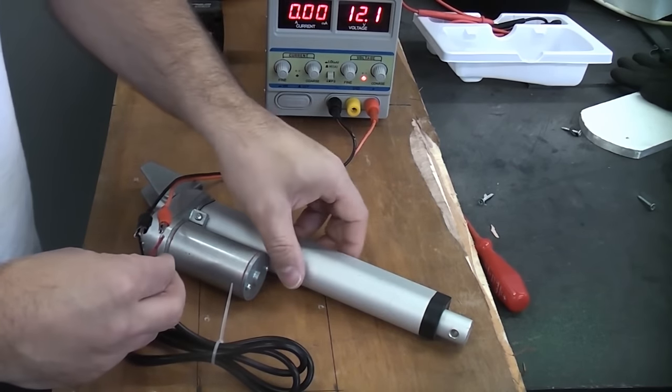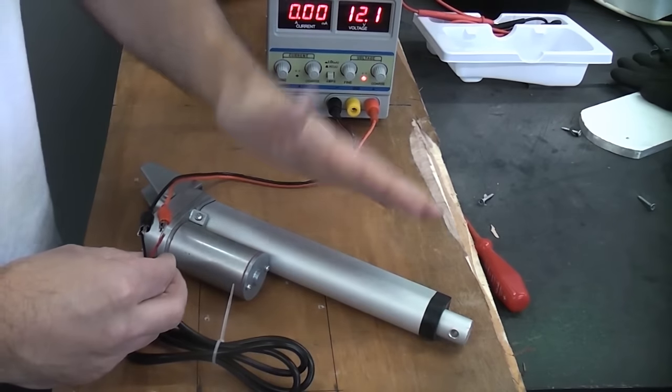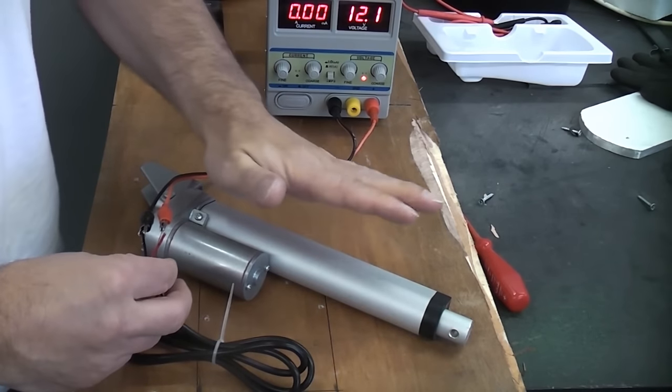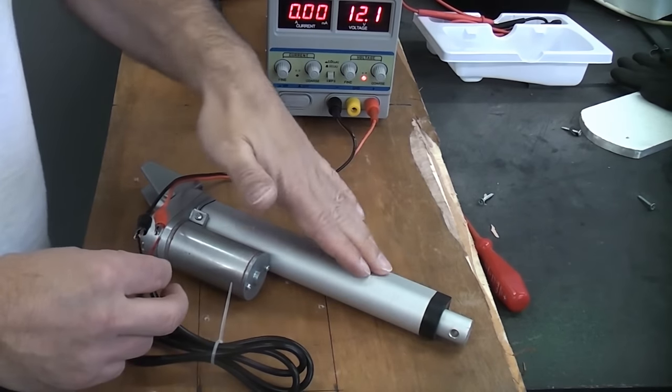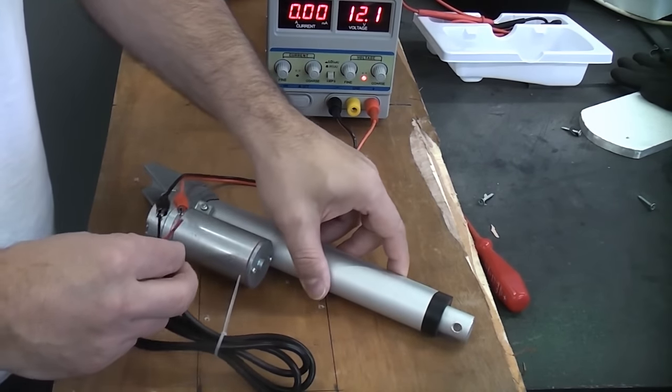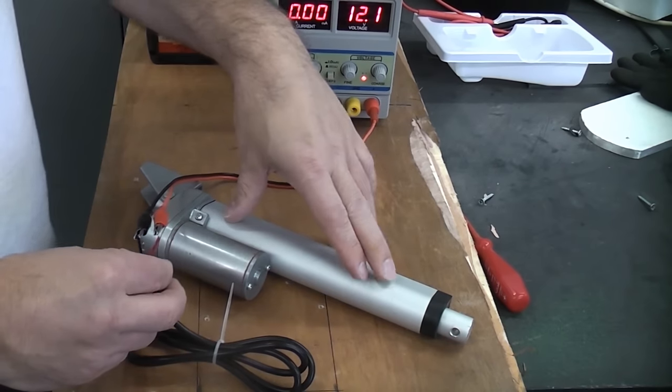So these are incredibly useful if you're making anything at home. These are used on robots, they're used on machines, they're used on everything. The beauty of this one is that it's 12 volt DC so it's incredibly safe voltage to be using. So you can use these quite safely for your own projects.